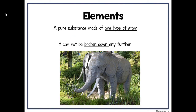Elements are a pure substance made of one type of atom. It cannot be broken down any further. For example, any one type of atom — if you have more of them, you just have more of that substance. It is all the same. Our elephant is made mostly of gray Legos; if we just talk about the gray Legos, they're all the same type of atom.